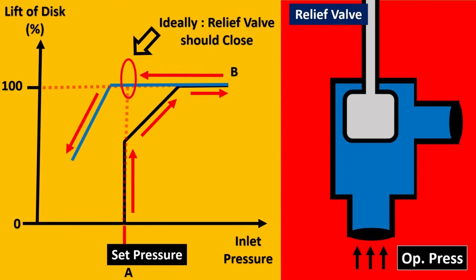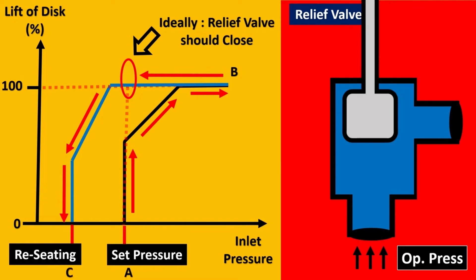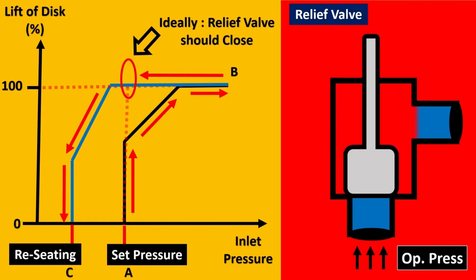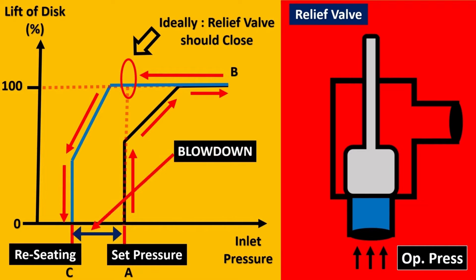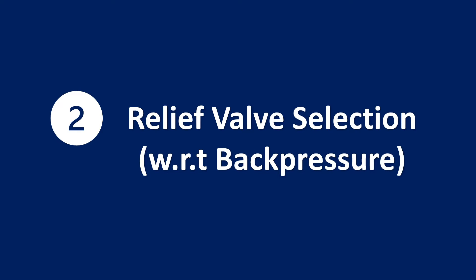Why does this happen? The pressure continues to drop even further, and only when it reaches the reseating pressure — let's call it point C — will the relief valve actually close and stop relieving fluid. This difference between the reseating pressure and the set pressure is what is called blowdown.